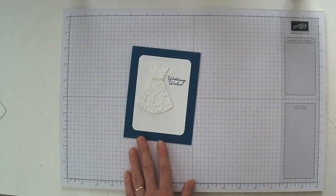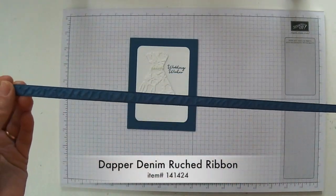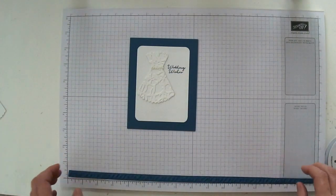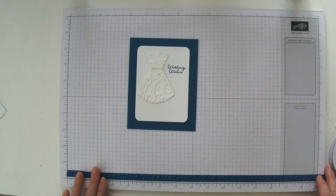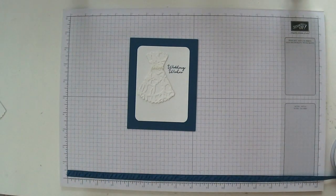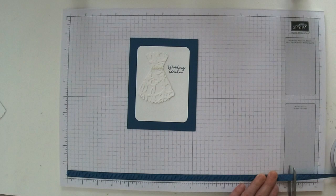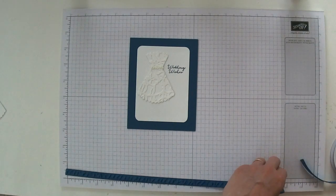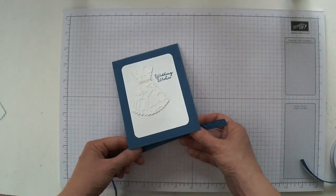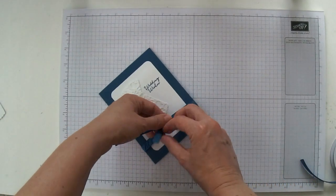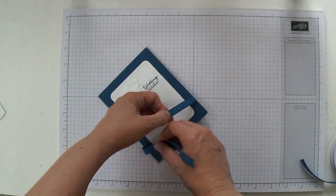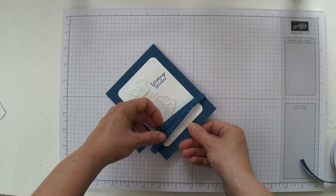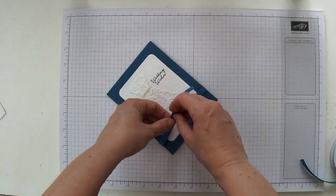And then I'm going to take some Dapper Denim ruched ribbon. This ruched ribbon is awesome and it matches exactly. So I'm going to need about 14 inches to wrap it around and just tie it in a knot. So I'm just going to take this and wrap it around. I'm going to shift it a little bit so it's underneath my wedding dress.